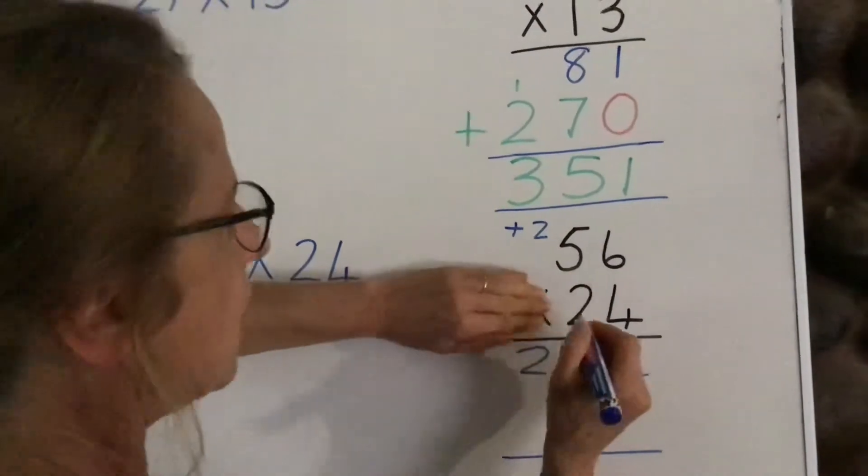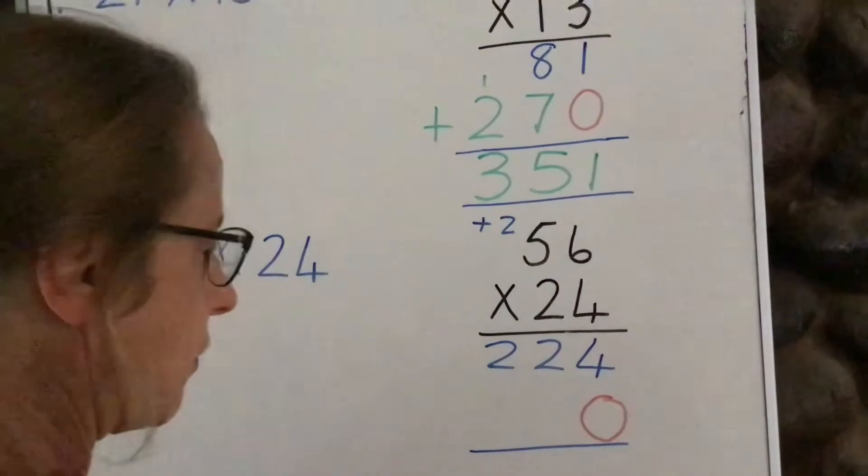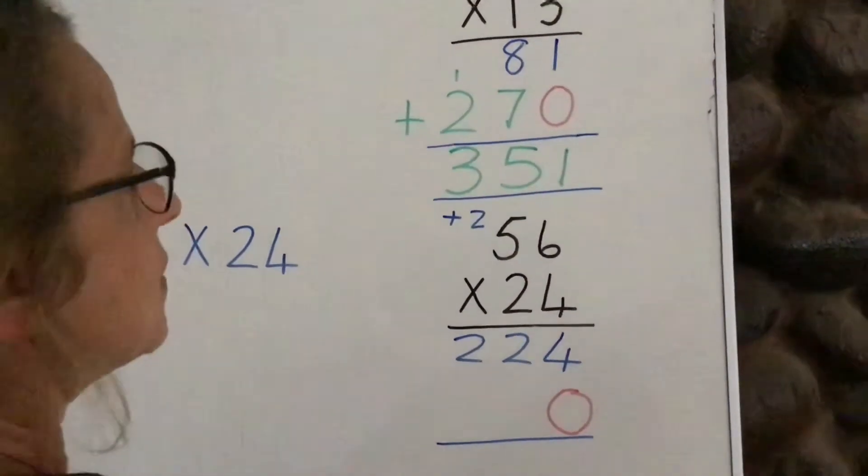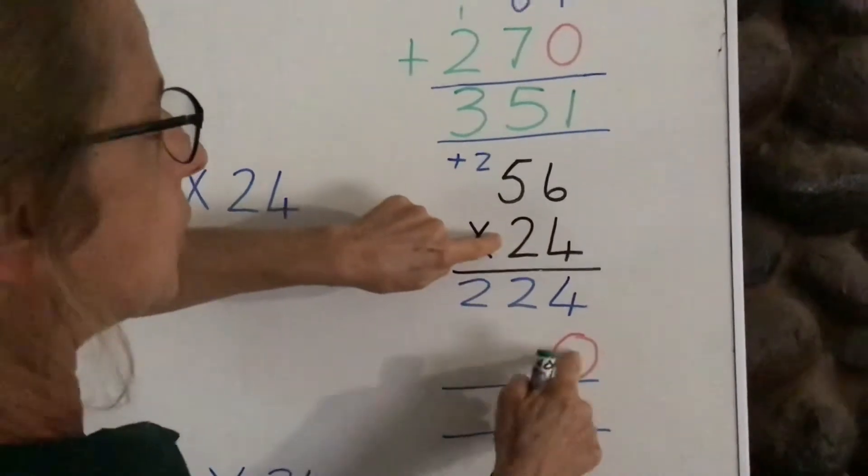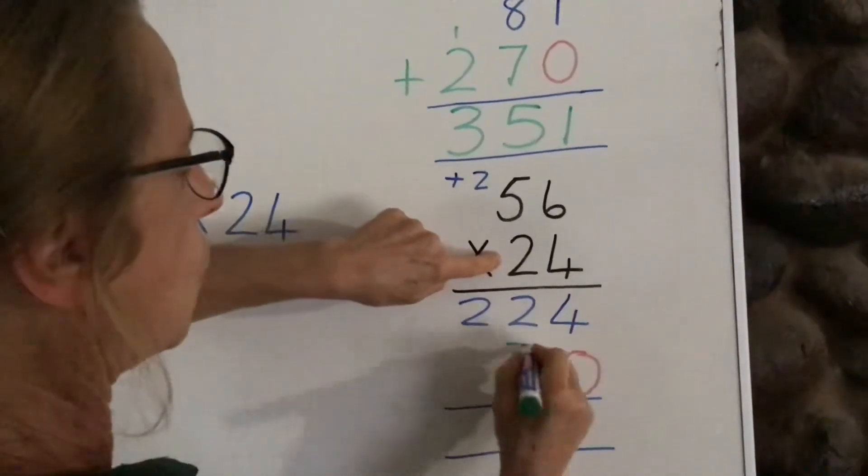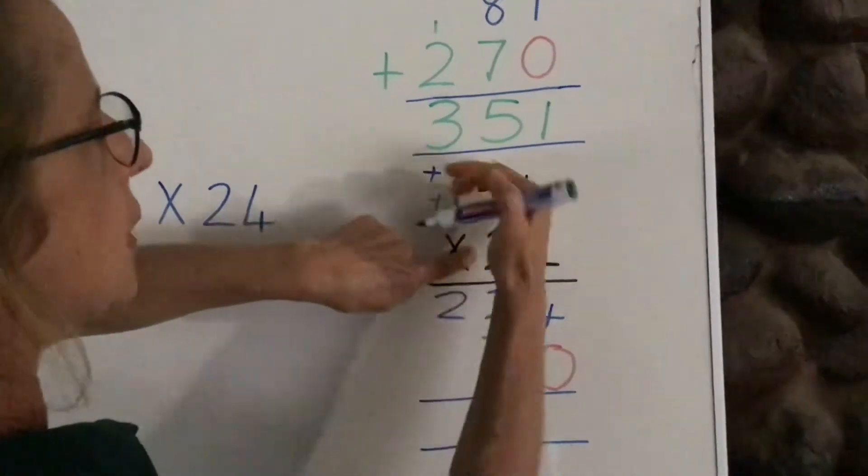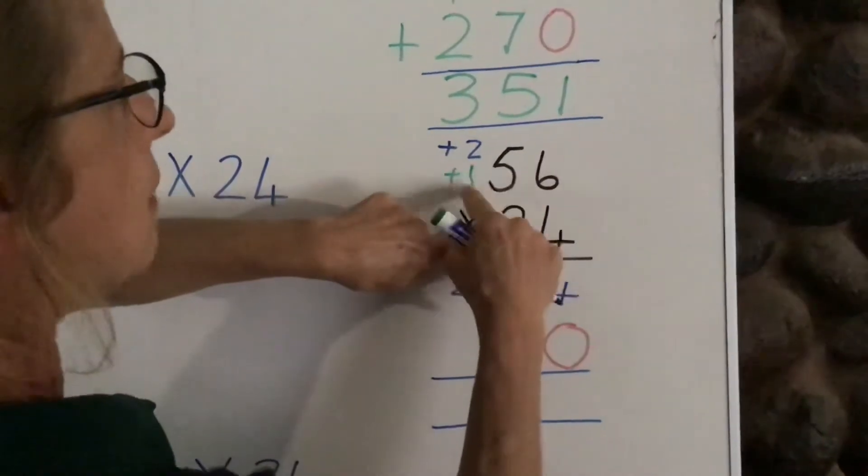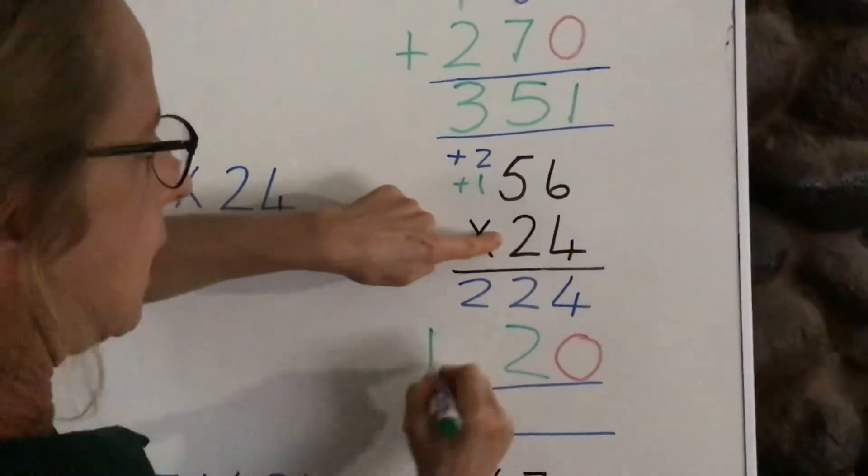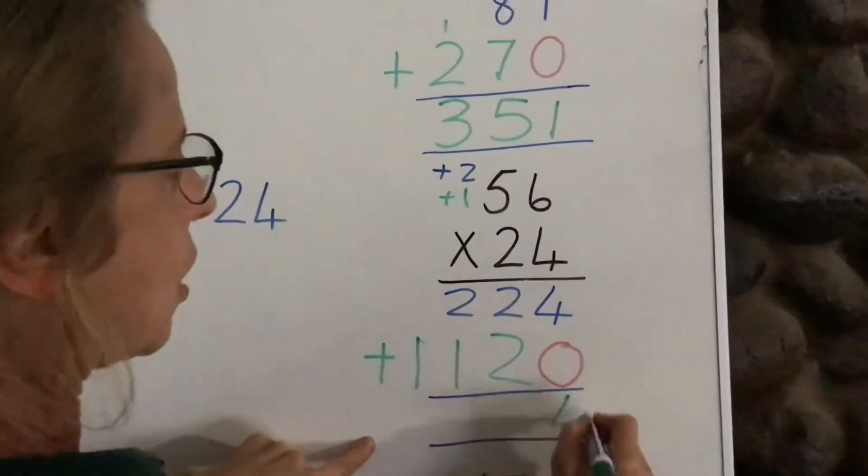Then we go to the next row. What do we do? We have to put our zero first, remember, please. And then we say two times, because now it's a two, it's not a 20, because we put a zero there. Two times six is 12, carry a one. And as you can see, we're using a different color for our next row so that we don't get muddled up. Two times five is 10, plus the one is 11.